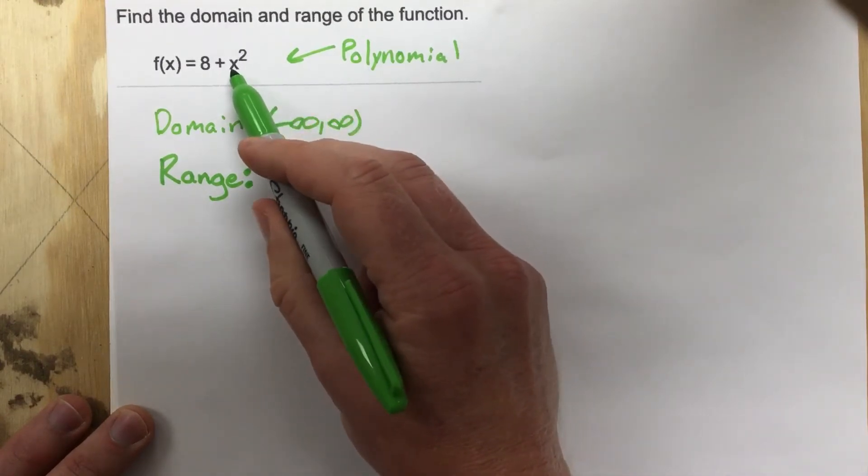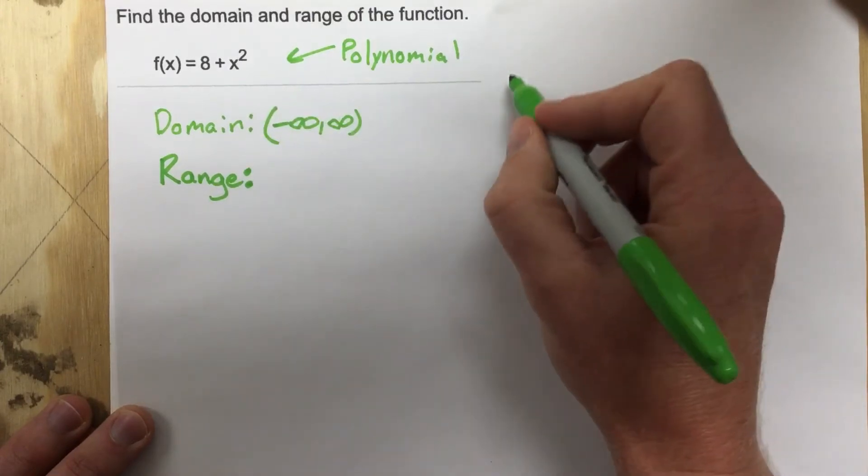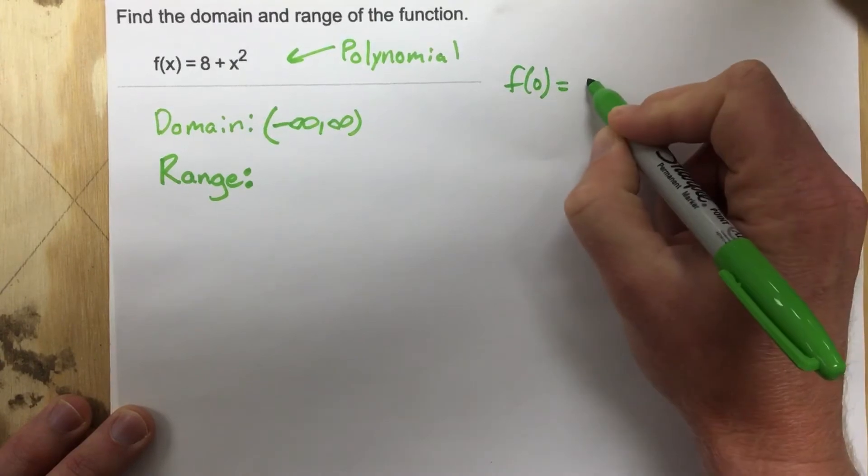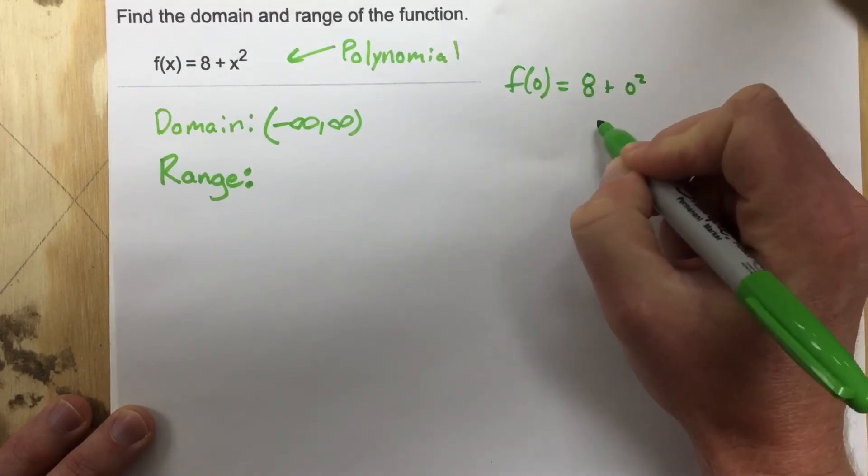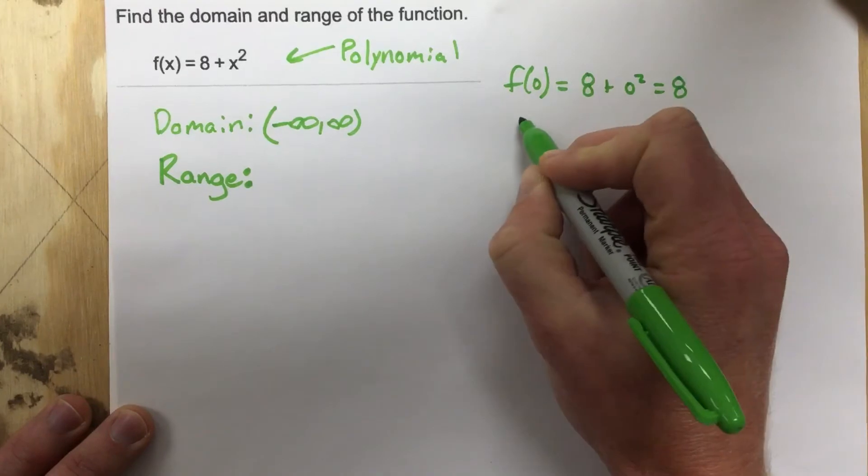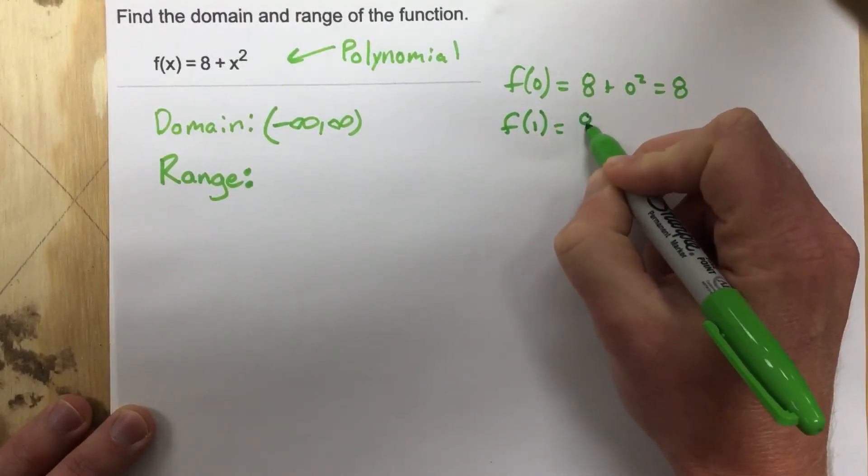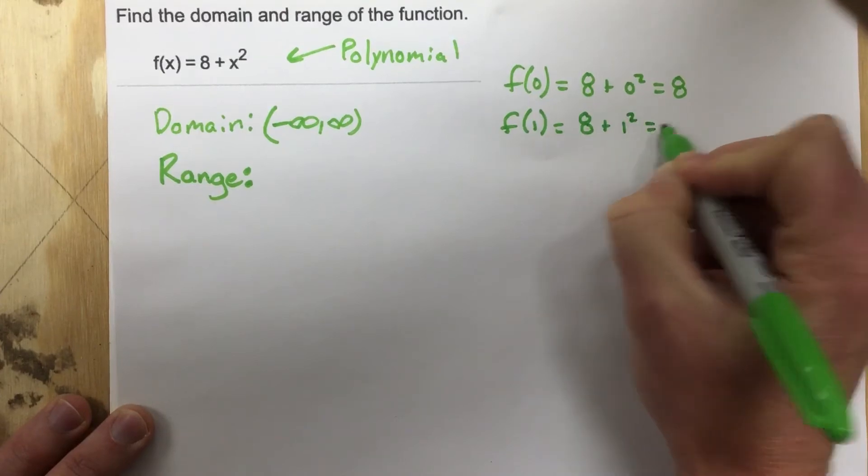Well let's start with 0. If I plug in 0 I end up with, so we'll say f(0) equals 8 plus 0 squared, which is 8. If I do f(1), that's 8 plus 1 squared, which is 9.